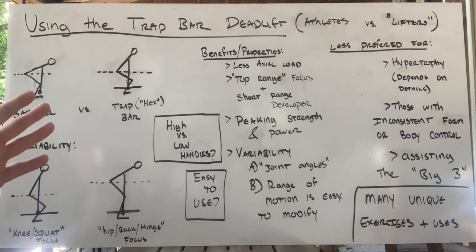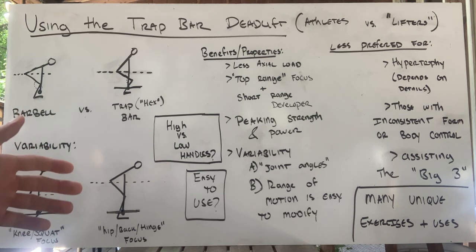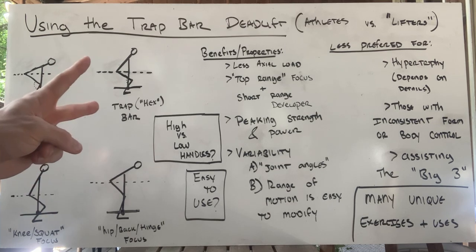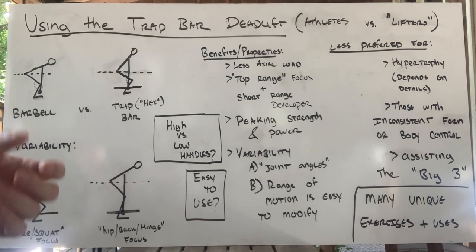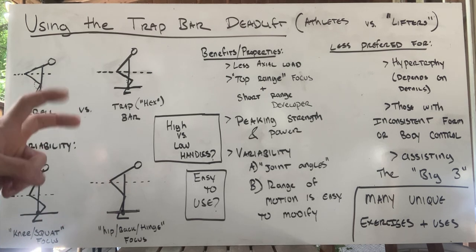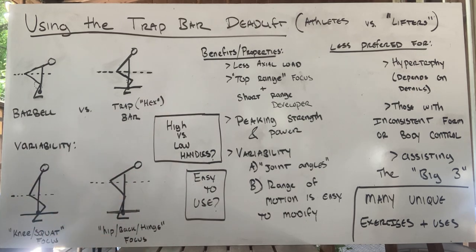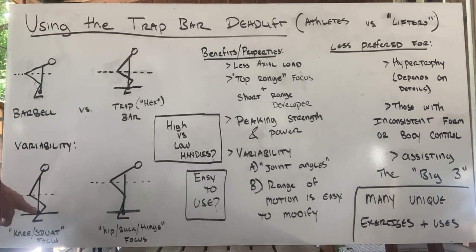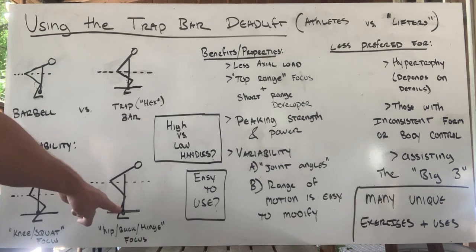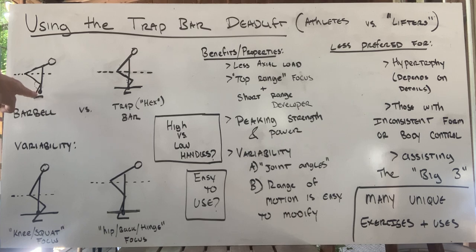One thing people commonly say about the trap bar is that it's easy to use. This is kind of true. Because of the variability in the movement, there's actually less that can go wrong — you can just grab it and stand up with it and you've successfully executed a trap bar deadlift of sorts. But you don't necessarily target the exact same things. If you were using it in the context of a program as a hinge-focused movement but a beginner is standing very squatty, they're not training it as effectively.